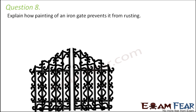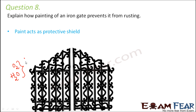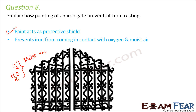Question number 8: Explain how painting of an iron gate prevents it from rusting. When we paint it, paint acts as a protective layer between the iron and the air and moisture. Iron reacts with oxygen present in the air and water — that is why moist air causes rusting. The paint breaks the contact of iron with moisture and oxygen, and therefore prevents rusting.